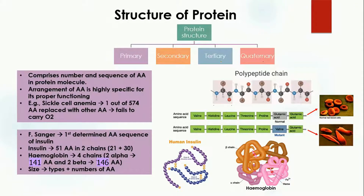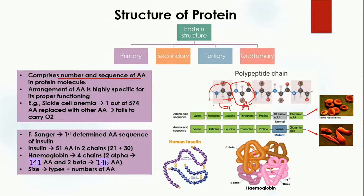First, talking about the primary structure — it comprises the number of amino acids and the sequence of amino acids present in the protein molecule. If you are going to study the primary structure of a protein, you should know which amino acids are present and in which sequence. For example, here glycine is present, here alanine is present, here tryptophan is present — this is the sequence of amino acids, which is the primary structure of the protein.